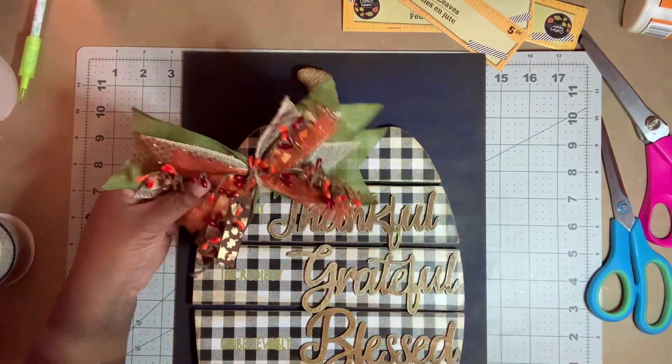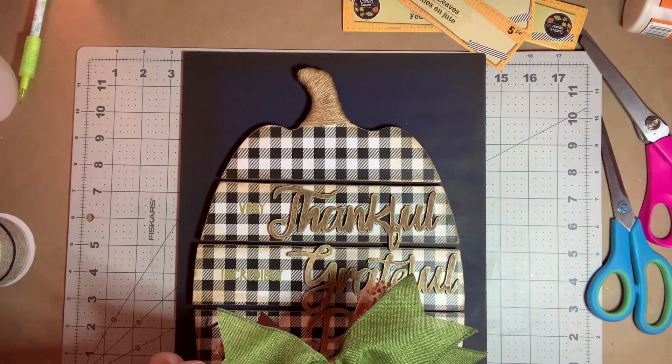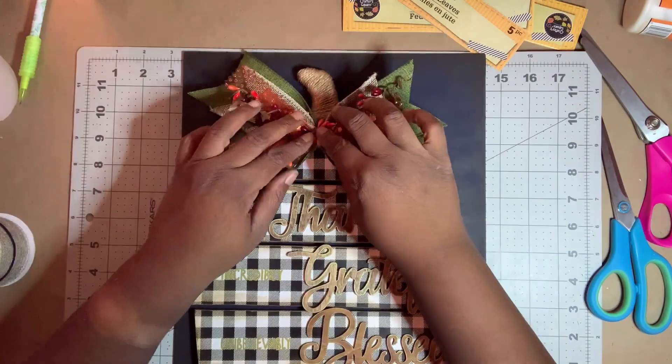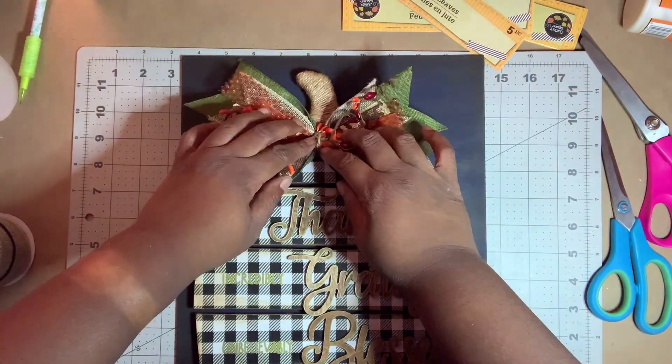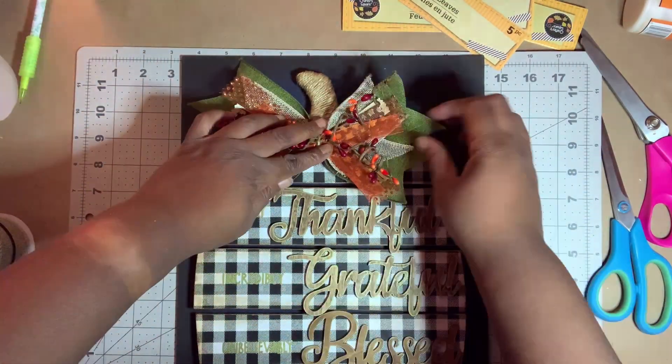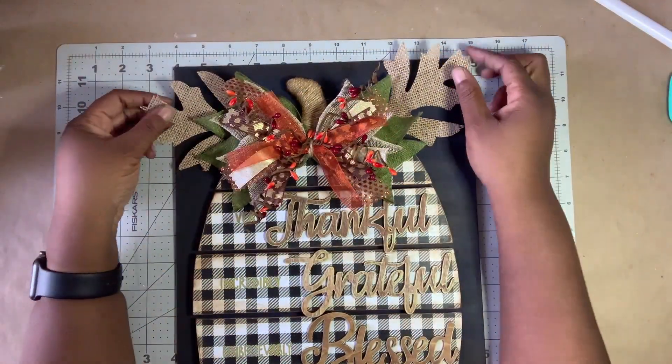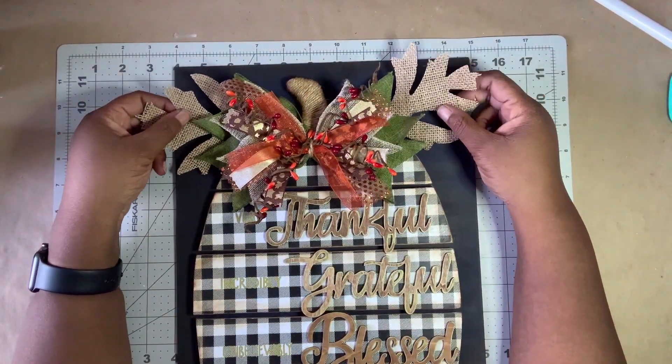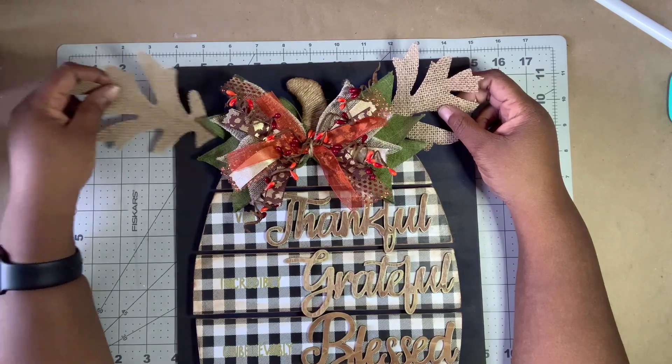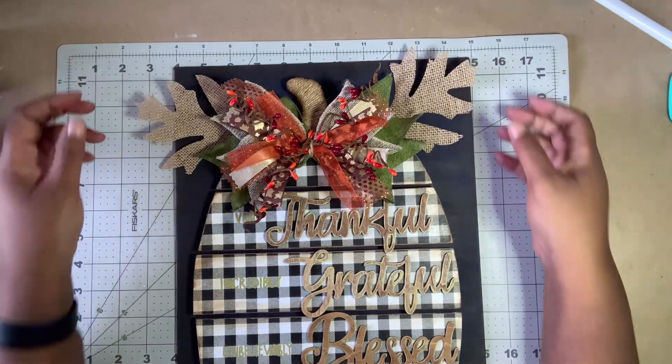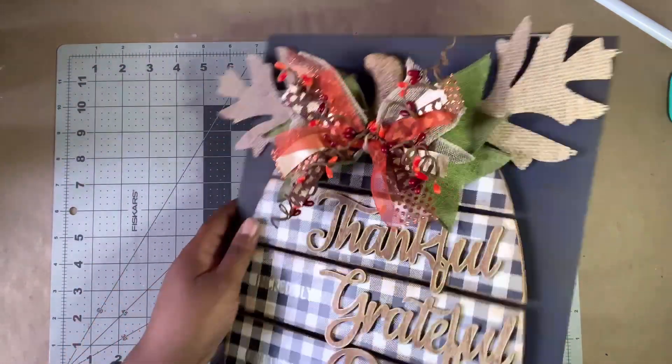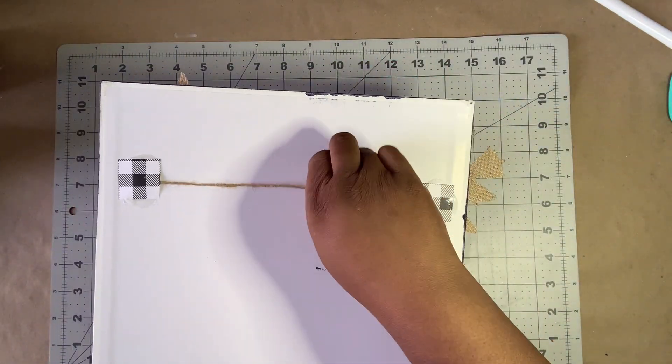I glued down the top of the pumpkin and then I attached the bow. Here you can see where I added the pitberry garland to the bow. After sitting with it for a while, I added a couple of burlap oak leaves from the Dollar Tree to the top. I didn't glue them down in case I changed my mind later. I added a hanger to the back and this project is done.